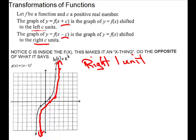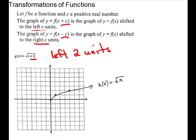For our next graph, our general graph is the square root of x. And we want to do the square root of x plus 2. The plus 2 is underneath with the x. So it will be a horizontal shift. It's plus 2. So it's going to move to the left 2.